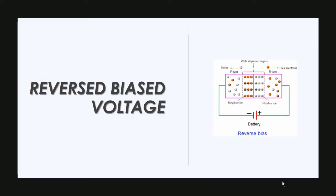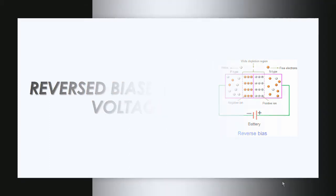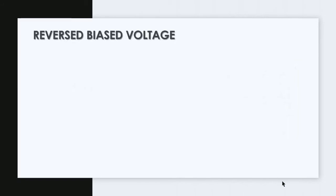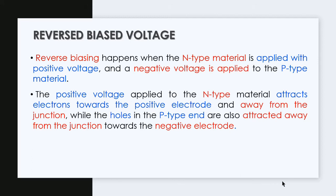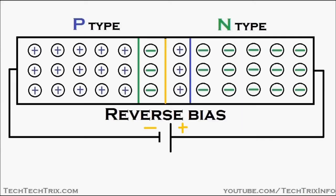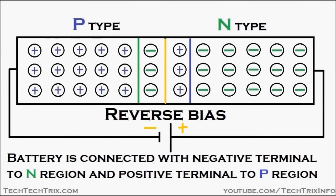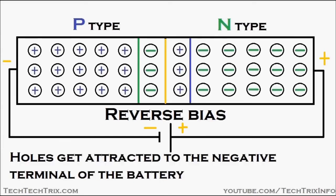After we know about forward bias voltage, let's talk about reverse bias voltage. Reverse bias happens when the N-type material is applied with positive voltage and negative voltage is applied to the P-type material. The positive voltage applied to the N-type material attracts electrons towards the positive electrode and away from the junction, while the holes in the P-type are also attracted away from the junction towards the negative terminal. In reverse biasing, the negative terminal of the battery is connected to the P-type semiconductor and the positive terminal is connected to the N-type semiconductor.